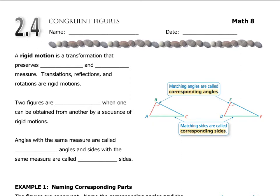We're going to define something right now that we've actually been talking about for the last few lessons, and that's called a rigid motion. A rigid motion is a transformation that preserves length and angle measure.